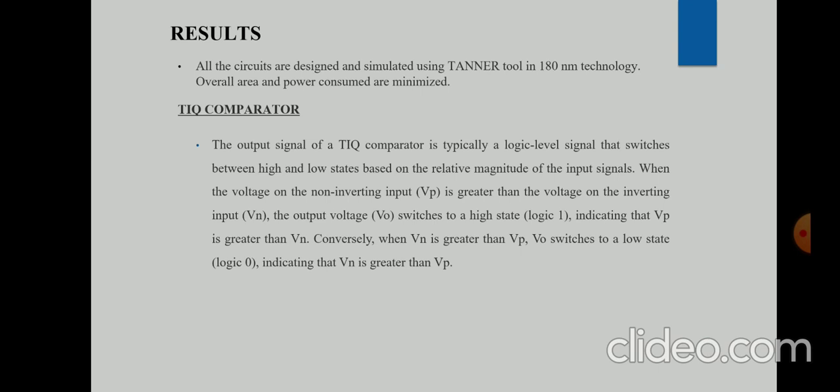We get results showing that area and power are minimized. Using Tanner EDA in 180nm technology, in the TIQ comparator we have Vp, Vo, and Vn, where Vp is the non-inverting input voltage, Vo is the output voltage, and Vn is the inverting input voltage. Using the high and low states — ones and zeros — we will get the thermometer code which is given to the MUX-based encoder. This is the output waveform of the TIQ comparator run in Tanner EDA, showing the comparison of two voltages and a thermometer-type output.